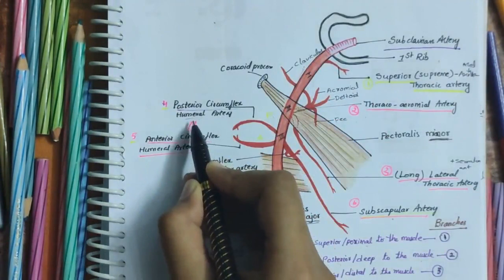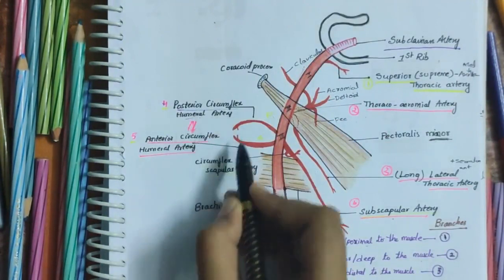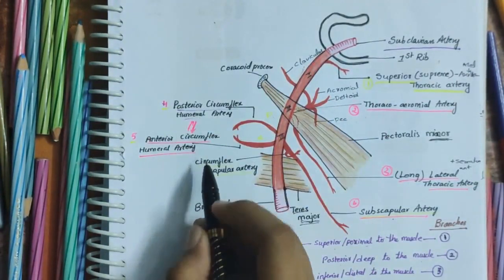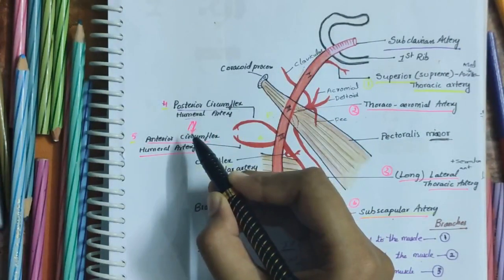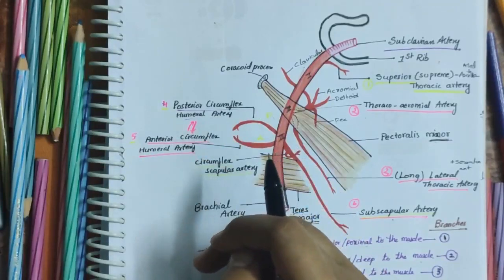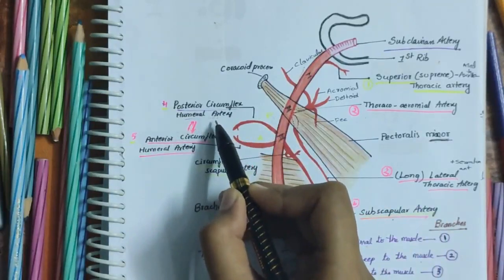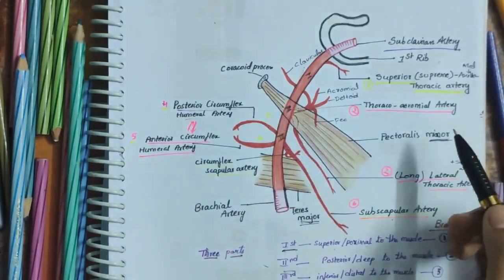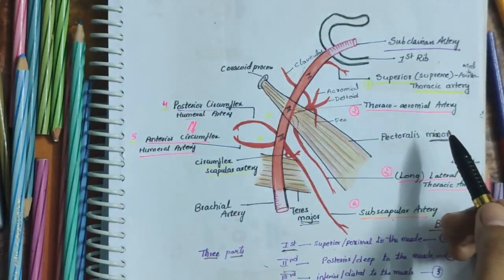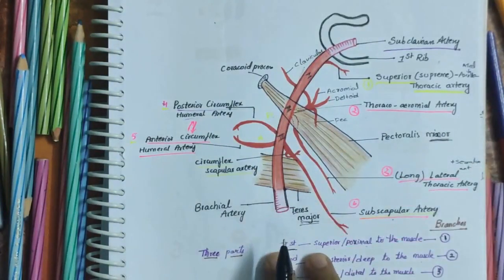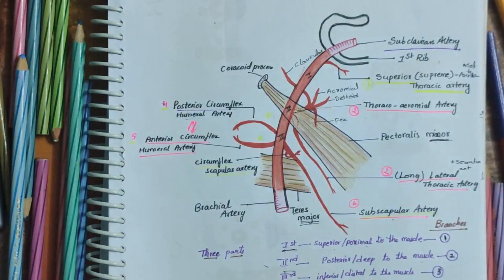The first part and its branch: the superior or supreme thoracic artery. It is a very small branch that arises near the subclavius muscle. It passes between the pectoralis major and minor muscles and supplies these muscles and the medial wall of the axilla.